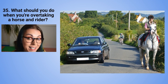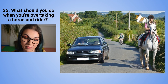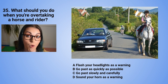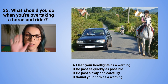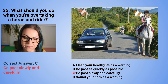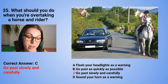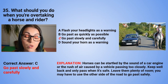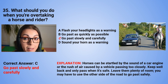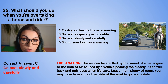Question 35: What should you do when you are overtaking a horse and rider? A. Flash your headlights as a warning. B. Go past as quickly as possible. C. Go past slowly and carefully. Or D. Sound your horn as a warning. The correct answer is C — go past slowly and carefully. Horses can be startled by the sound of a car engine or the rush of air from a passing vehicle. Keep well back and only pass when it's safe. Leave plenty of room — you may even need to use the other side of the road to go past safely.